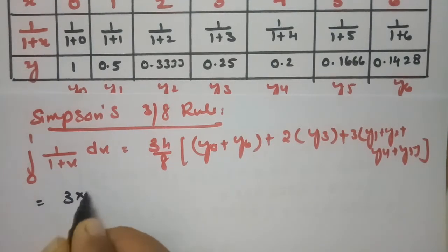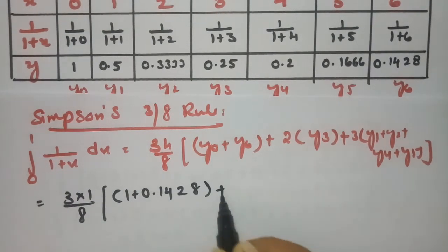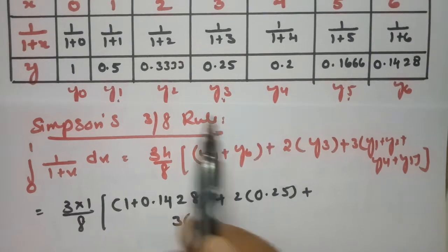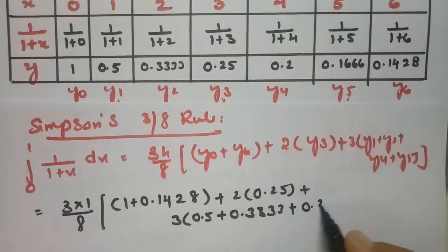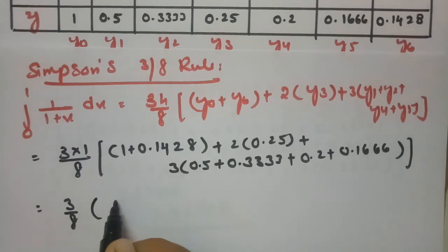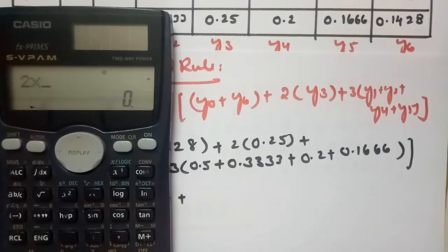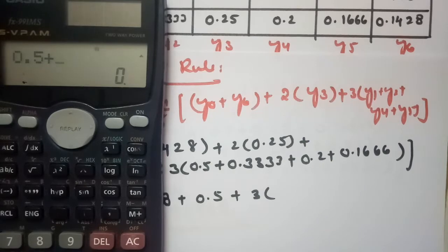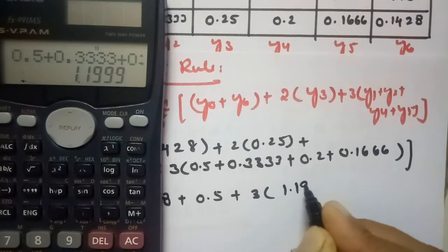Substituting h = 1 into Simpson's three-eighths rule: (3×1/8) × [(1 + 0.1428) + 2×(0.25) + 3×(0.5 + 0.3333 + 0.2 + 0.1666)]. This gives (3/8) × [1.1428 + 0.5 + 3×(1.1999)], where 0.5 + 0.3333 + 0.2 + 0.1666 = 1.1999.